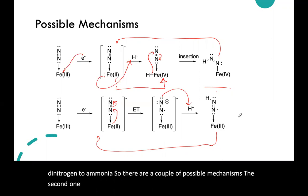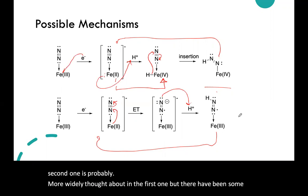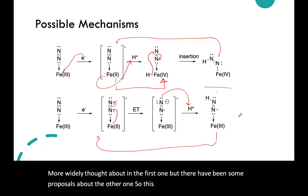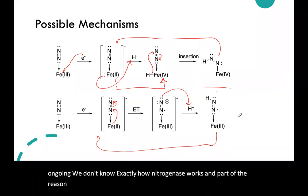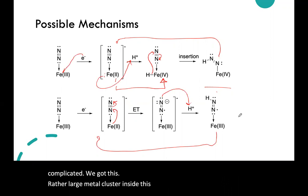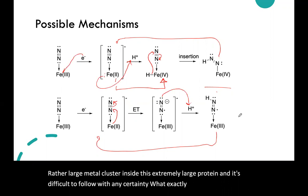So this is an example where the science is ongoing. We don't know exactly how nitrogenase works, and part of the reason we don't know exactly how nitrogenase works is that the system is so complicated. We've got this rather large metal cluster inside this extremely large protein, and it's difficult to follow with any certainty what exactly is going on inside.